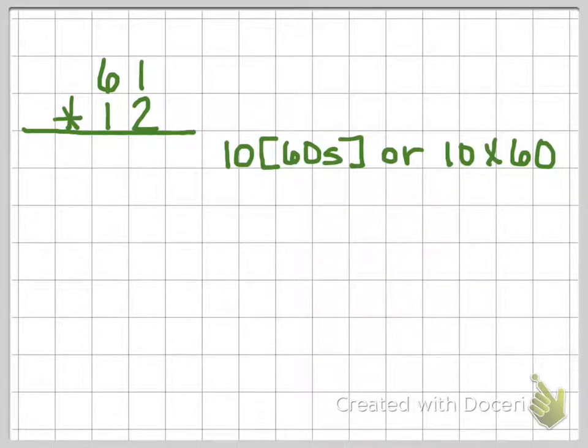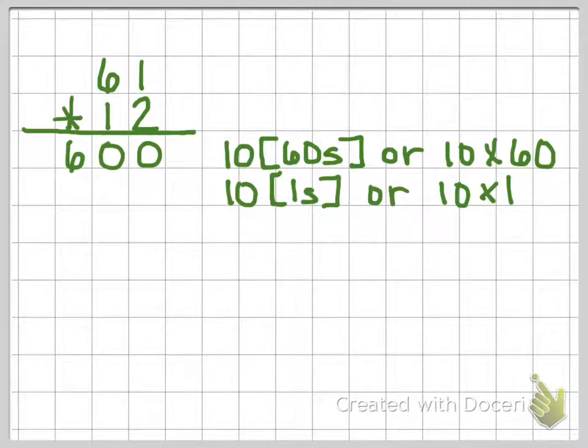So first of all, I'm going to say there are 10 60s in that problem, or 10 times 60, which gives me 600, and then we have 10 1s, or 10 times 1, which gives me 10.